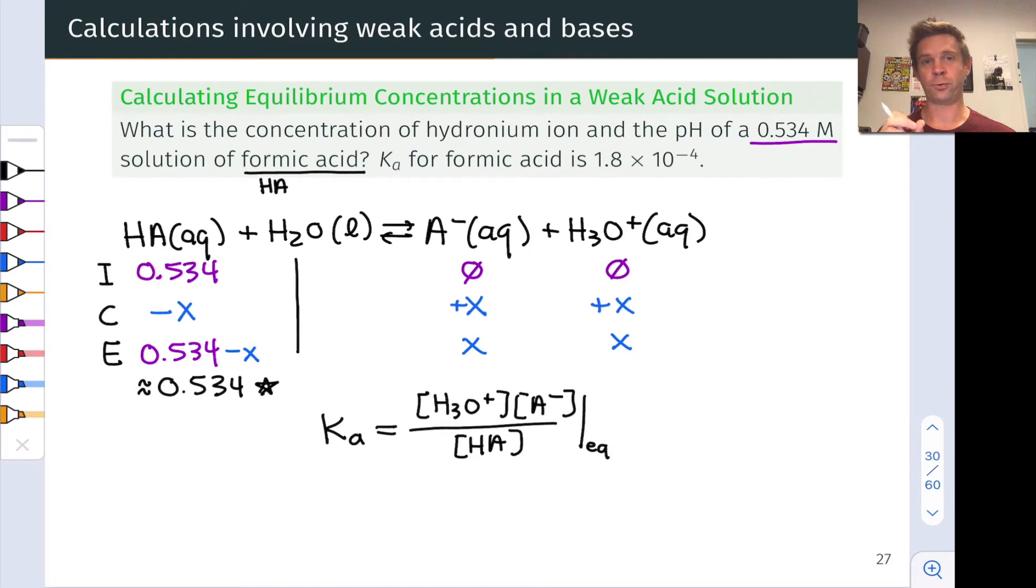Now we have expressions for each molarity at equilibrium and we can plug those into the equilibrium equation to arrive at X squared divided by 0.534 equals Ka, that given value of 1.8 times 10 to the negative 4.